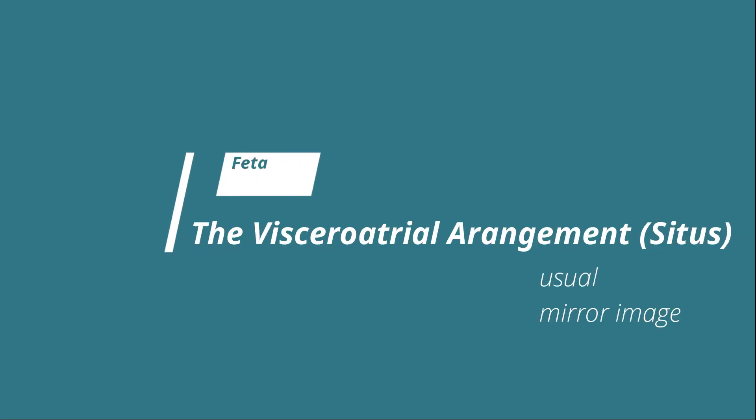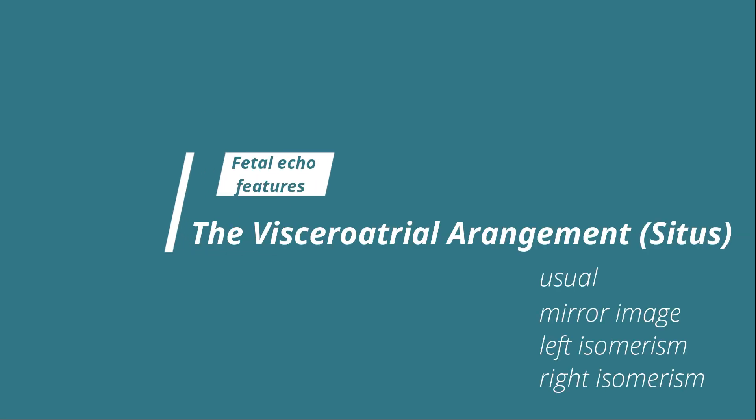There are four possible types of viscera and atrial arrangement: usual, mirror image, and left and right isomerism.